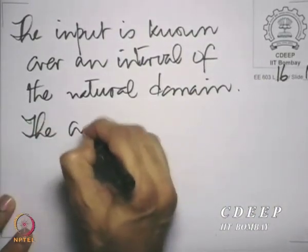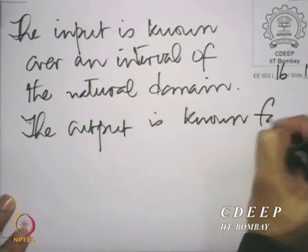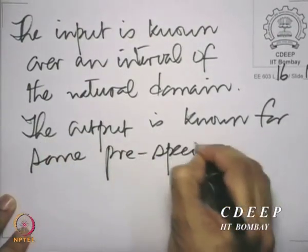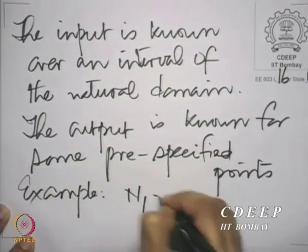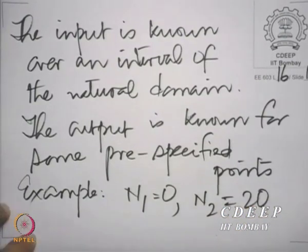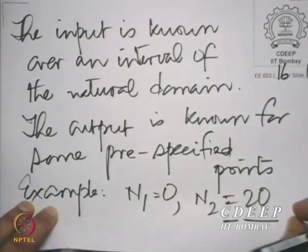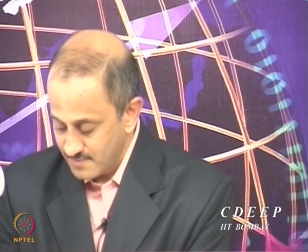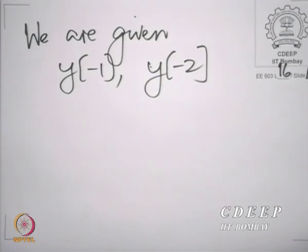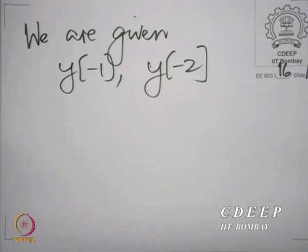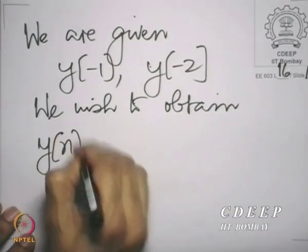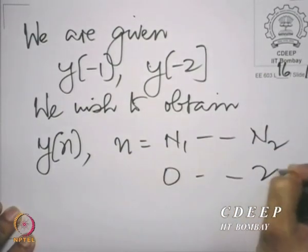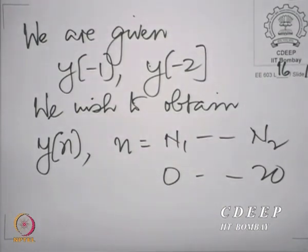The output is known for some pre-specified points. For example, suppose N1 = 0 and N2 = 20. We are given y[−1] and y[−2] — what we call the initial values — and we wish to obtain y[n] for n equal to N1 to N2, namely 0 to 20.